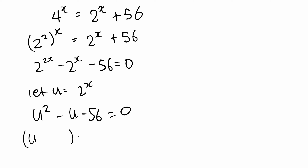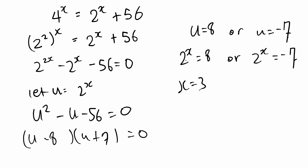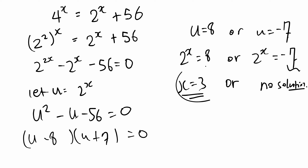Then we factorize: (u)(u) all equals 0, and we could have minus 8 and 7 — minus 8 plus 7 gives us minus 1, and negative 8 times 7 gives us negative 56. So u is either 8, or u equals negative 7. What was u initially? It was 2 to the power of x. So 2 to the power of x equals 8, or 2 to the power of x equals negative 7. Since 2 to the power of 3 is 8, x equals 3. But we can't get a negative answer by raising a number to a power — we'll always get a positive number — so that equation has no solution. Our only answer is x equals 3.